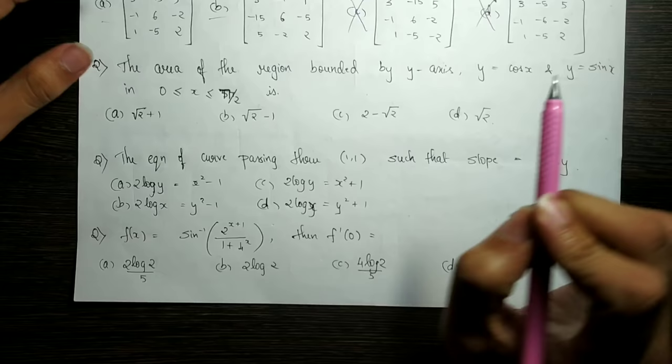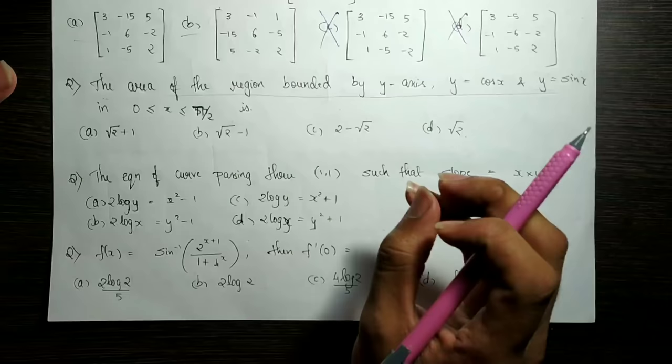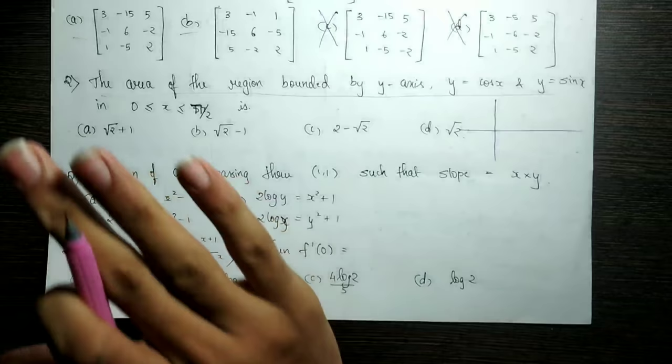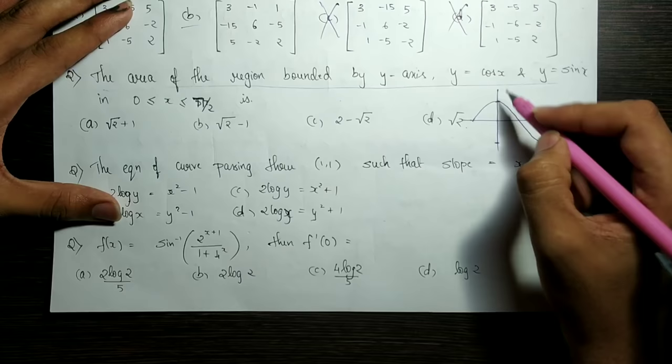The question is: the area of the region bounded by the y-axis, y equal to cos x, y equal to sin x, and x belongs to 0 to π/2. First, you can draw and see the integration of the integral. If cos x is 1 and minus 1, then cos x is equal to cos x and sin x is equal to sin x.